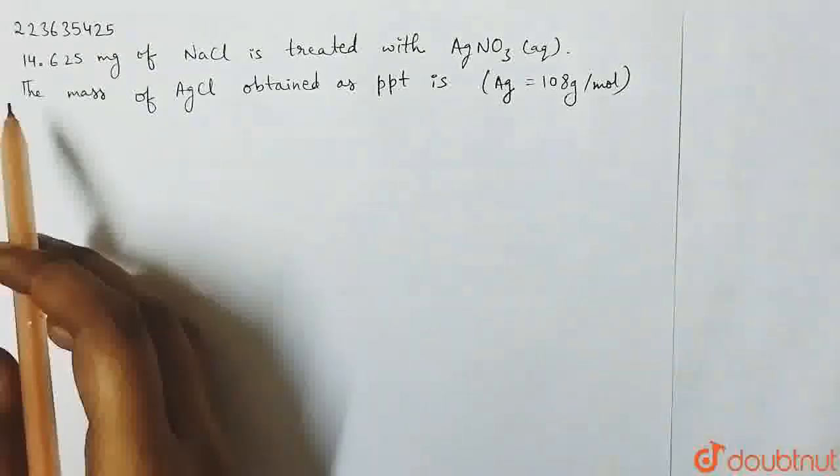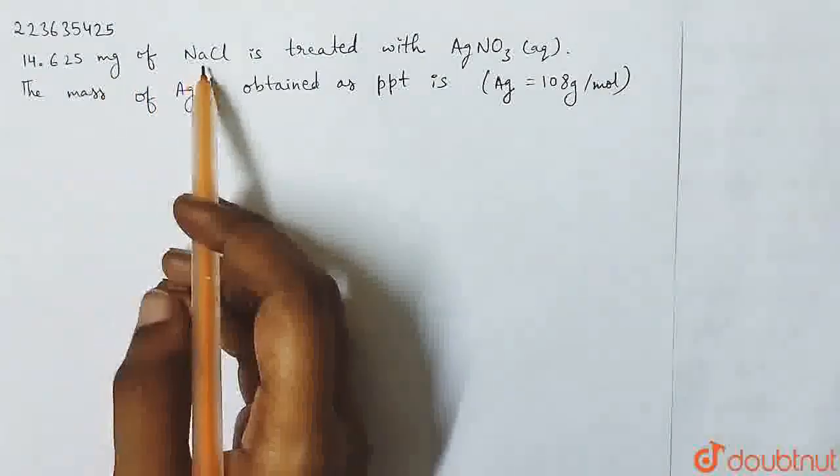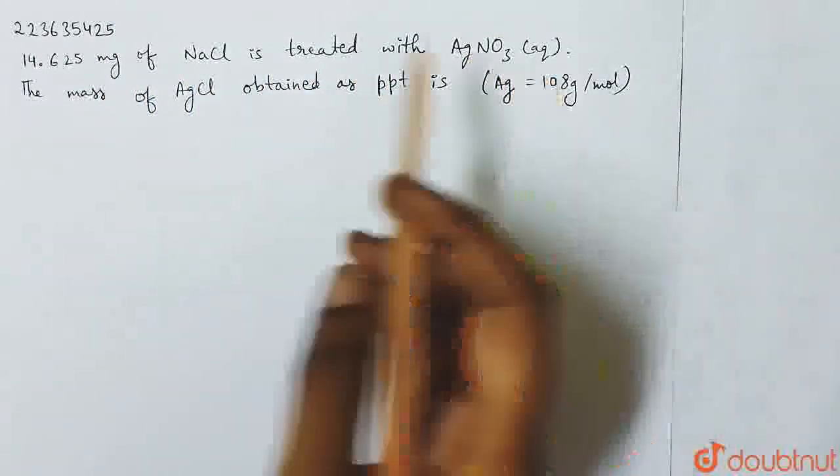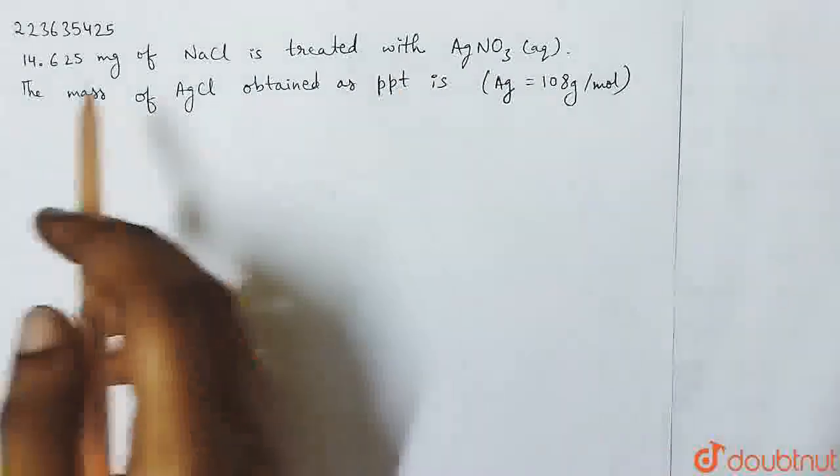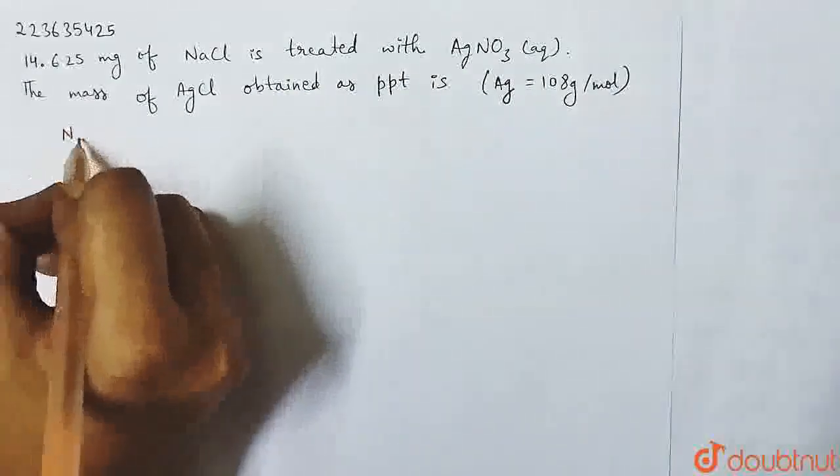The question is: 14.625 mg of NaCl is treated with AgNO3 aqueous. The mass of AgCl obtained as precipitate is. We have given NaCl, that is 14.625 mg of NaCl to treat with silver nitrate aqueous solution.